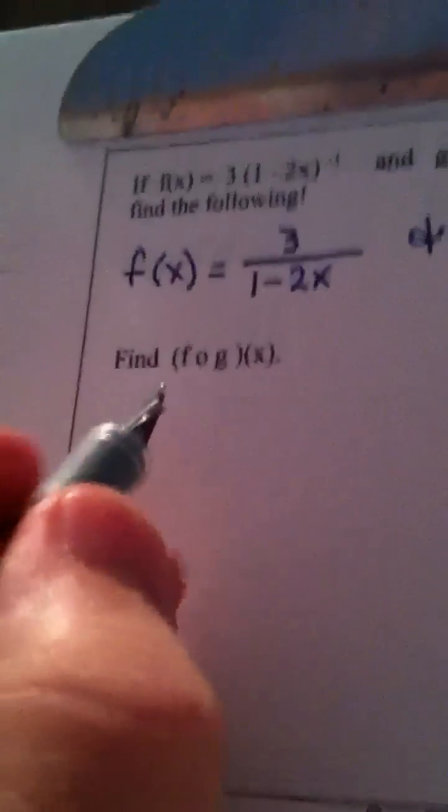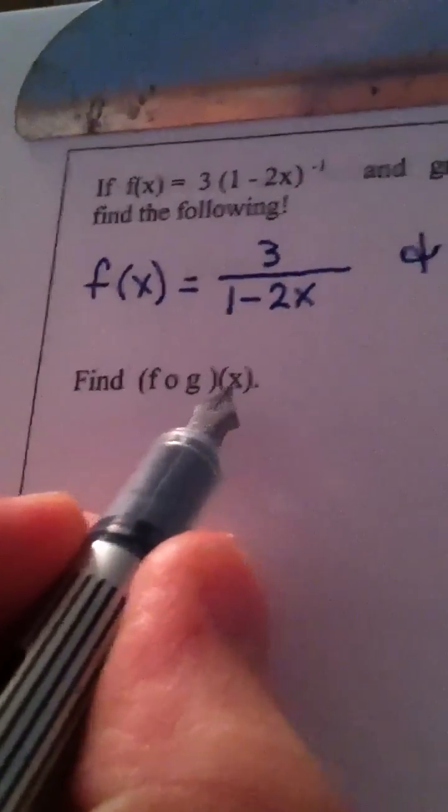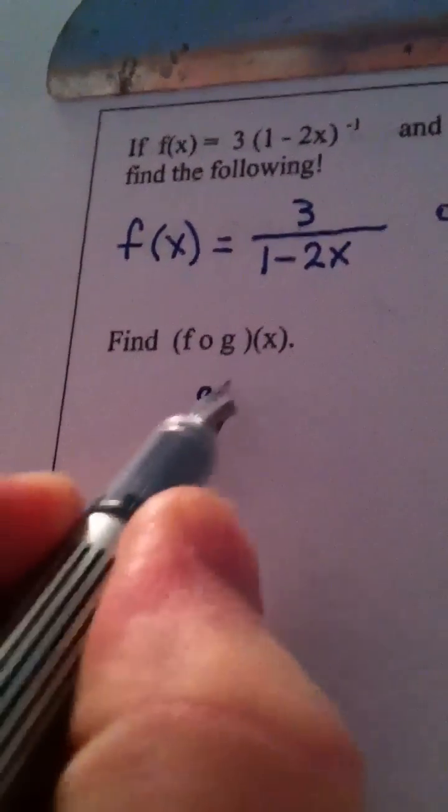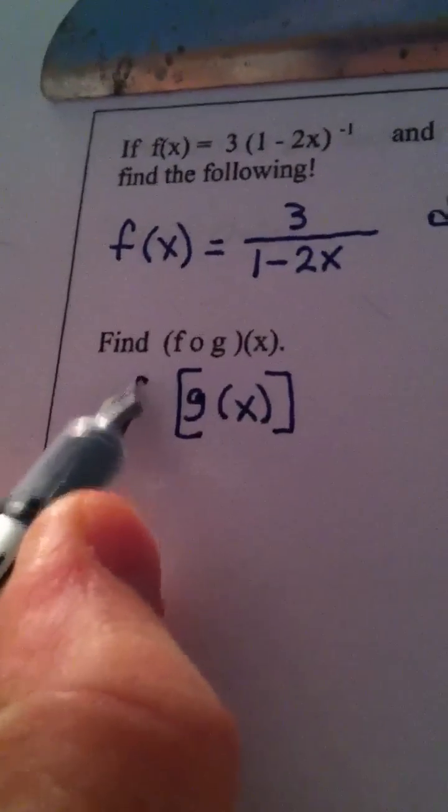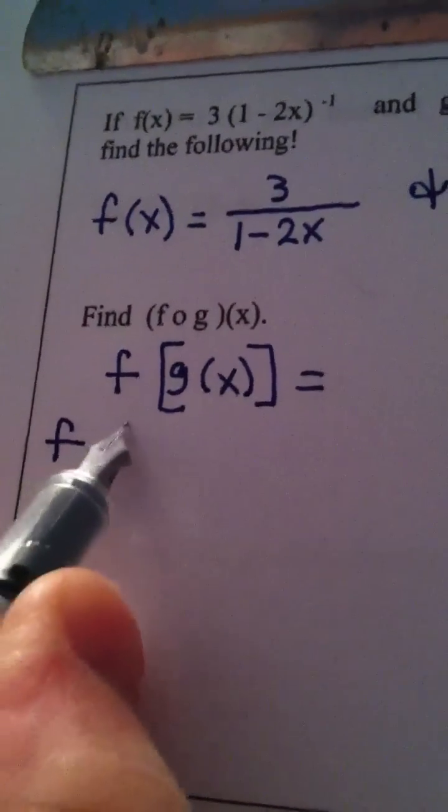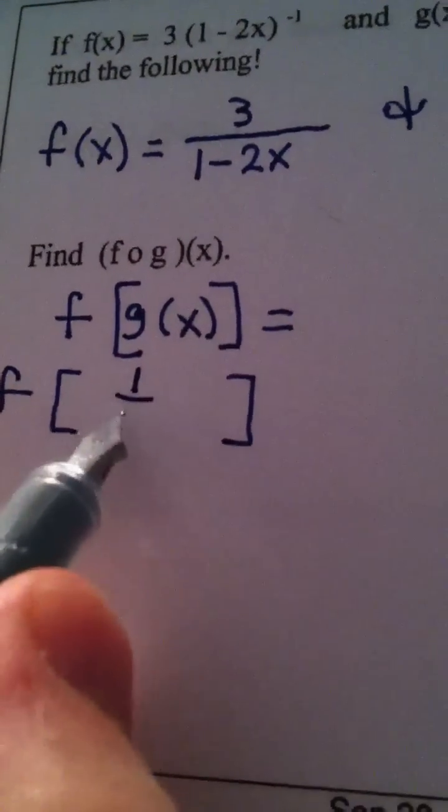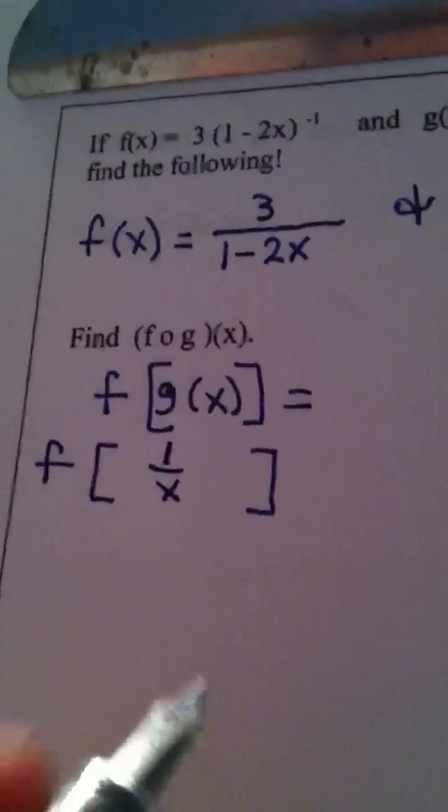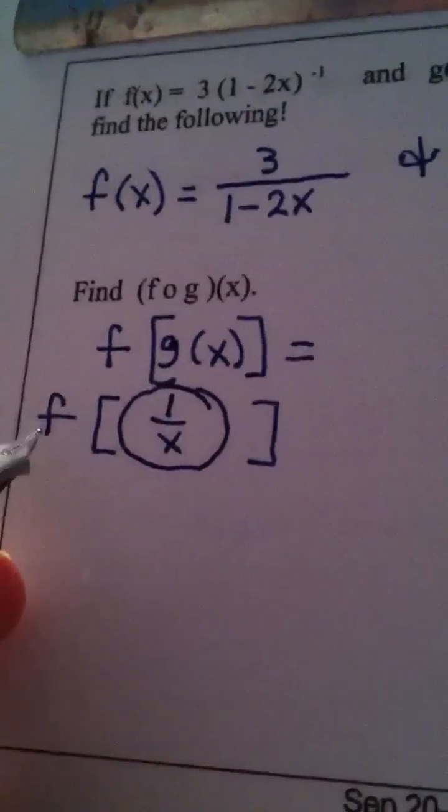Now, the first thing we're asked to find is f composed with g of x. The way you do composition, x first goes into g, so we find g of x first, and that answer goes into f. So you leave f alone for a minute. Now, what happens, this becomes the input into function f.